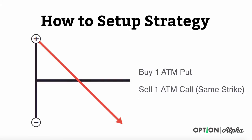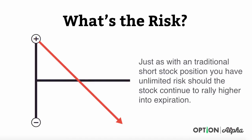How do we actually set up this strategy? It's actually pretty easy. Basically, what we're going to do is buy an at-the-money put option, which is as close to where the stock is trading right now as possible. At the same time, right across the option chain, we're going to go ahead and sell an at-the-money call option at the same strike. This will ideally get us synthetically short the stock at that strike price.